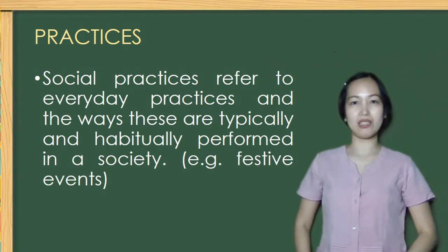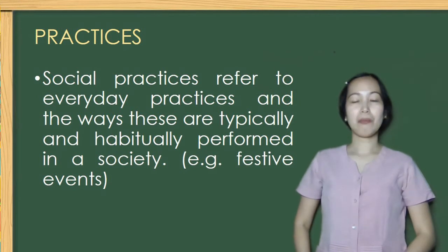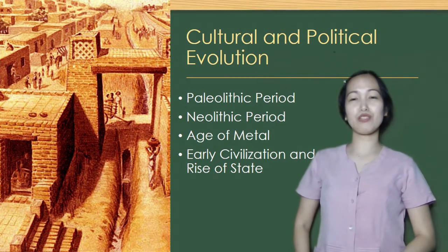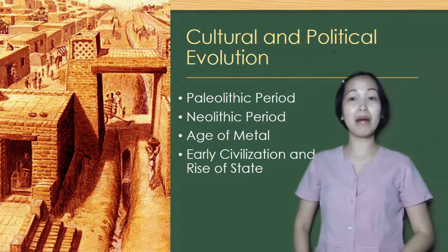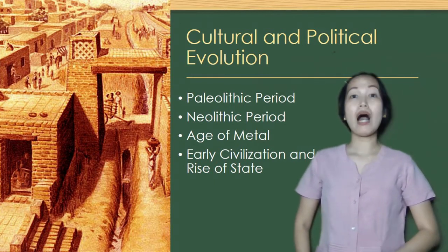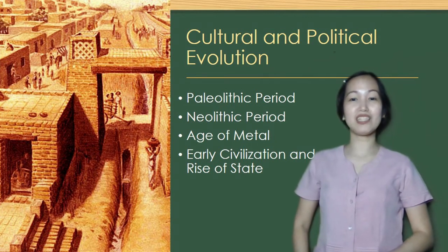Next is practices. Social practices refer to everyday practices and the ways these are typically and habitually performed in a society — for example, festive events. The physical as well as mental development of early human beings helped them understand and adapt to their existing environment. As we go on, you will learn the different cultural and political developments that happened to human beings.